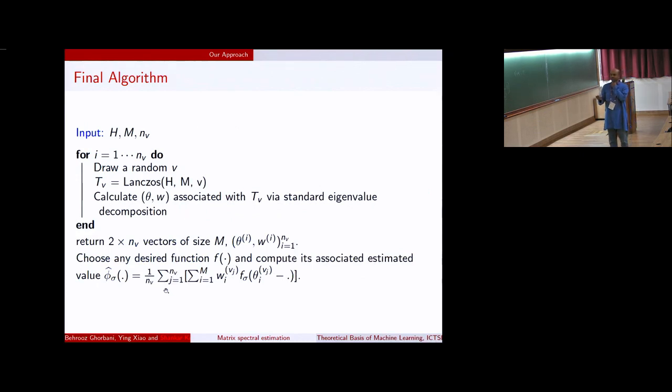This is the entire algorithm. We draw several Vs, do Lanczos on them, calculate the thetas and Ws from the method I described, and that will give me all the quadrature nodes I need to compute this expression. So this is the entire method.